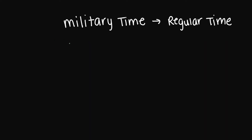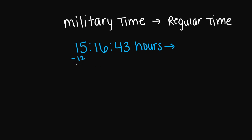What about 15:16:43 hours? Regular time — I'm going to subtract 12 because I'm going from military to regular. This is going to give me 3. So my regular time is going to be 3:16:43 seconds, and this is going to be p.m.